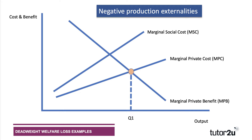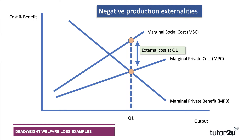I'm assuming there are no externalities from consumption in this analysis, so the output is Q1 and the market is in equilibrium. But then we build into the model the existence of negative production externalities — there might be waste products, air pollution, or noise pollution — which means there's an external cost that we add on to the marginal private cost to give the marginal social cost, which equals private cost plus external cost. At output Q1, if the market does not take this into account, there's going to be a market failure and a potential welfare loss.